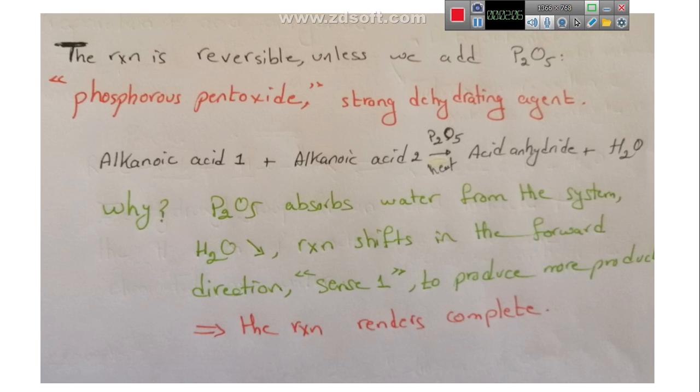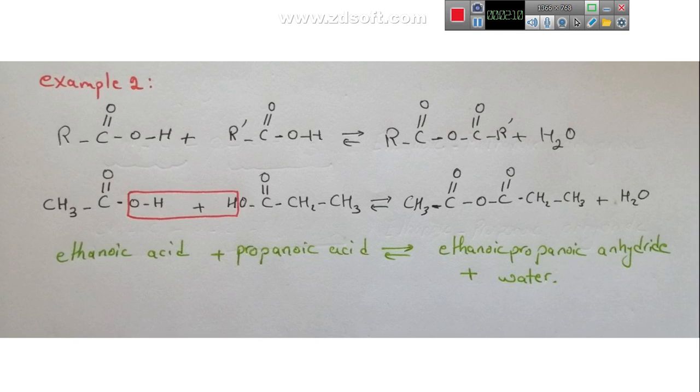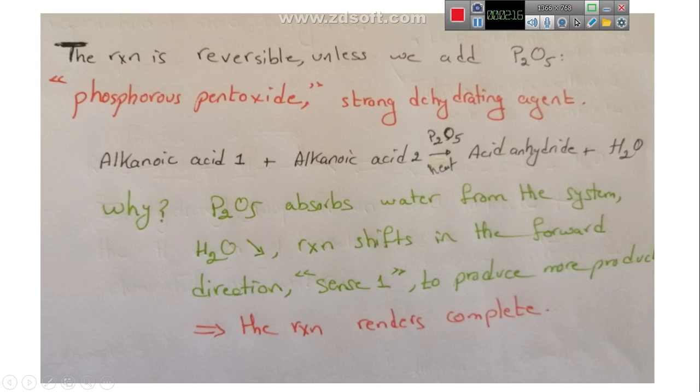Such reaction is reversible. Intermolecular dehydration is a reversible reaction, unless we use P2O5, which is phosphorus pentoxide. If we use P2O5, the reaction would no more be reversible. That's simple because according to Chatelier's principle, P2O5, which is a strong dehydrating agent, it absorbs water. The water here on the right side decreases. According to Chatelier's principle, the reaction is shifted in the forward direction to compensate this loss of water, meaning that the reaction is always in the forward direction due to the action of P2O5, and thus the reaction would be complete and non-reversible.